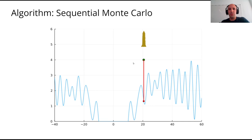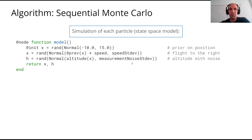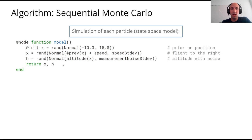Here is the code for the previous illustration. The model for the plane takes a prior for the initial position on the left of the lake (hence the -10). The new position model moves with a constant speed plus noise. The altitude variable h is a function of the position — we assume the shape of the mountain is known — with some measurement noise. The model returns both the hidden state x and the altitude h that you will observe.